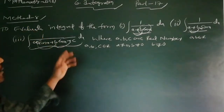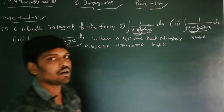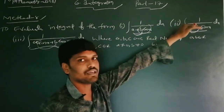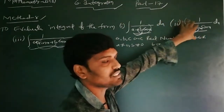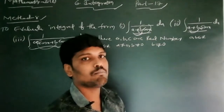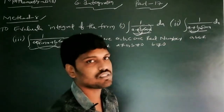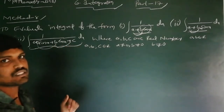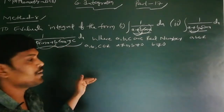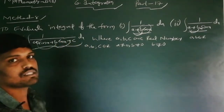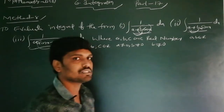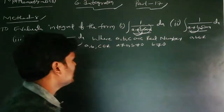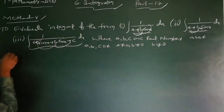What is Method 8? Method 8 applies to integrals of the form 1/(A + B cos x) or 1/(A + B sin x), where A and B are real numbers and B ≠ 0. Another case is 1/(A sin x + B cos x + C), where A, B, C are real numbers and both A ≠ 0 and B ≠ 0. This is the form of Method 8.